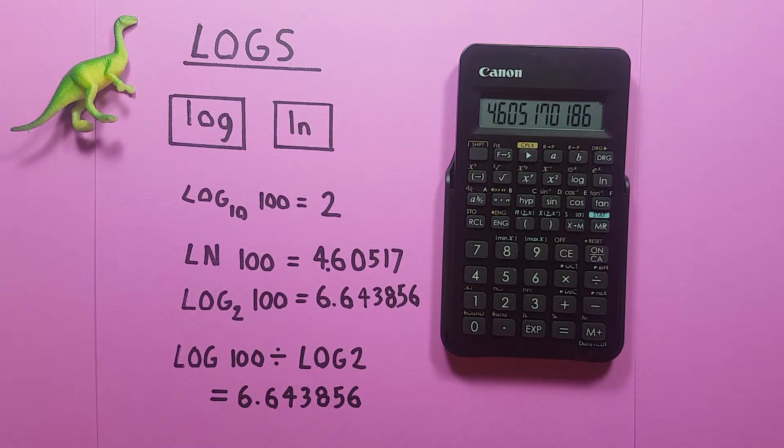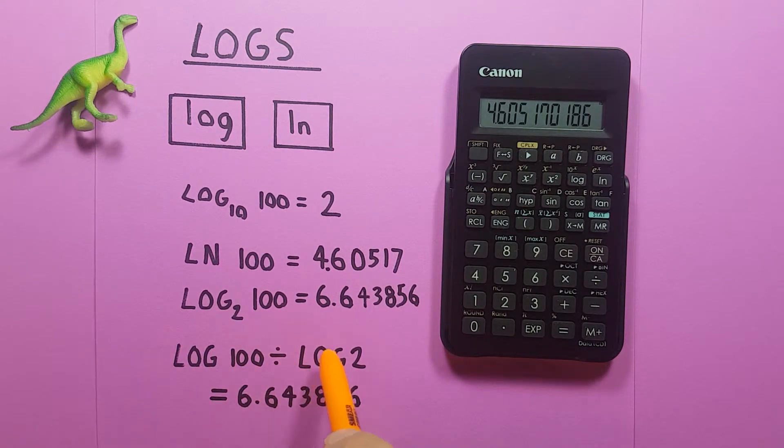But what if we wanted to find a log base that isn't 10 or the natural log? To do that we need to apply something known as the change of base formula where we divide the log of the number we're trying to find by the log of the base. So if we're trying to find log base 2 of 100, we would have to find log 100 divided by log 2.